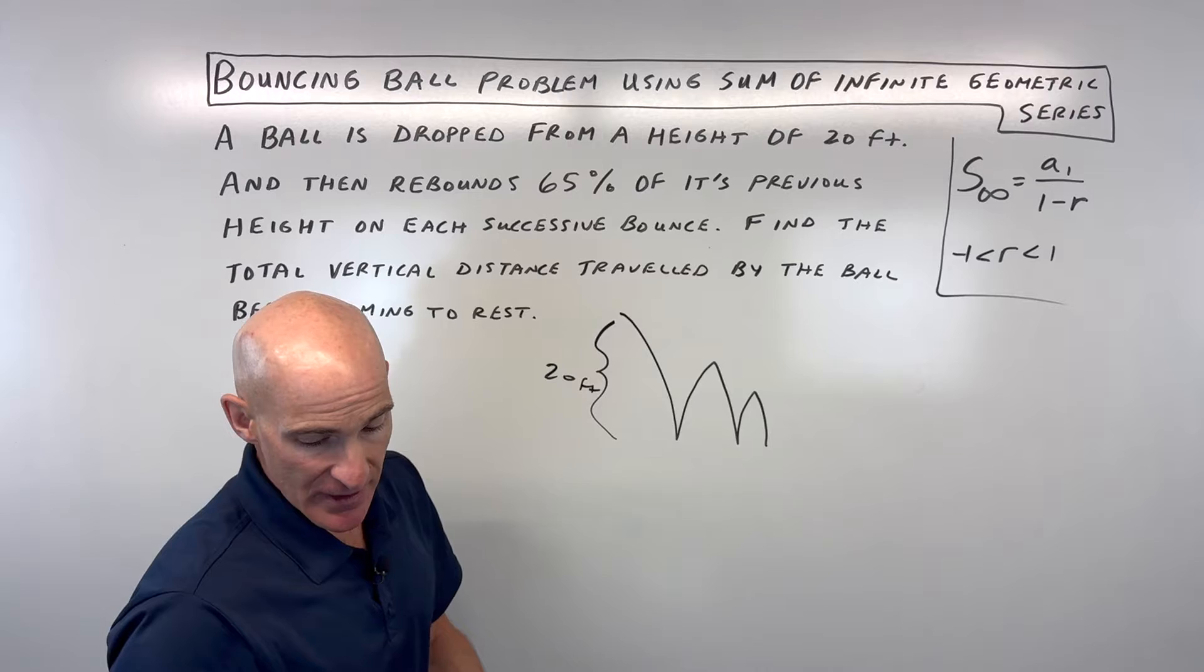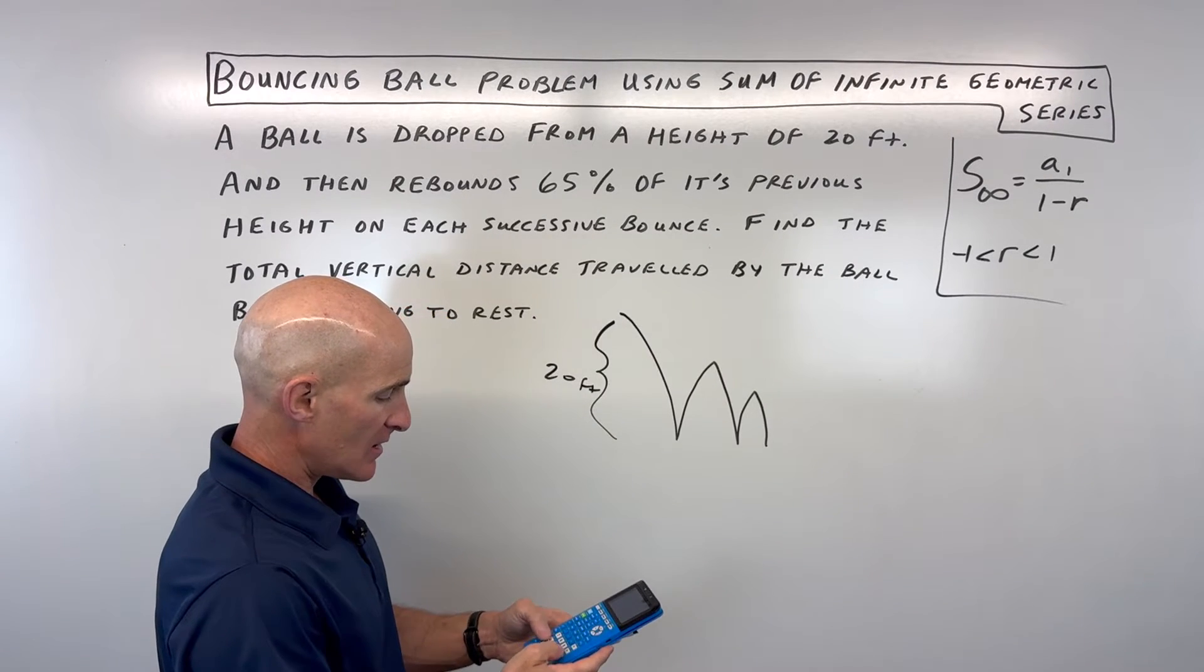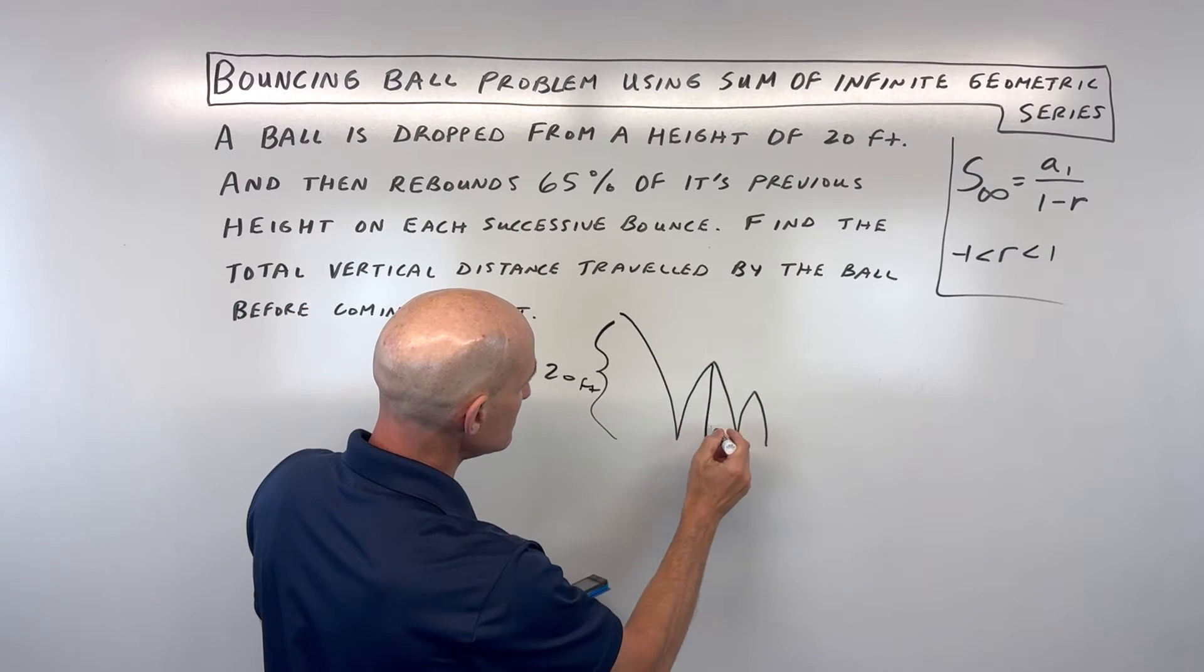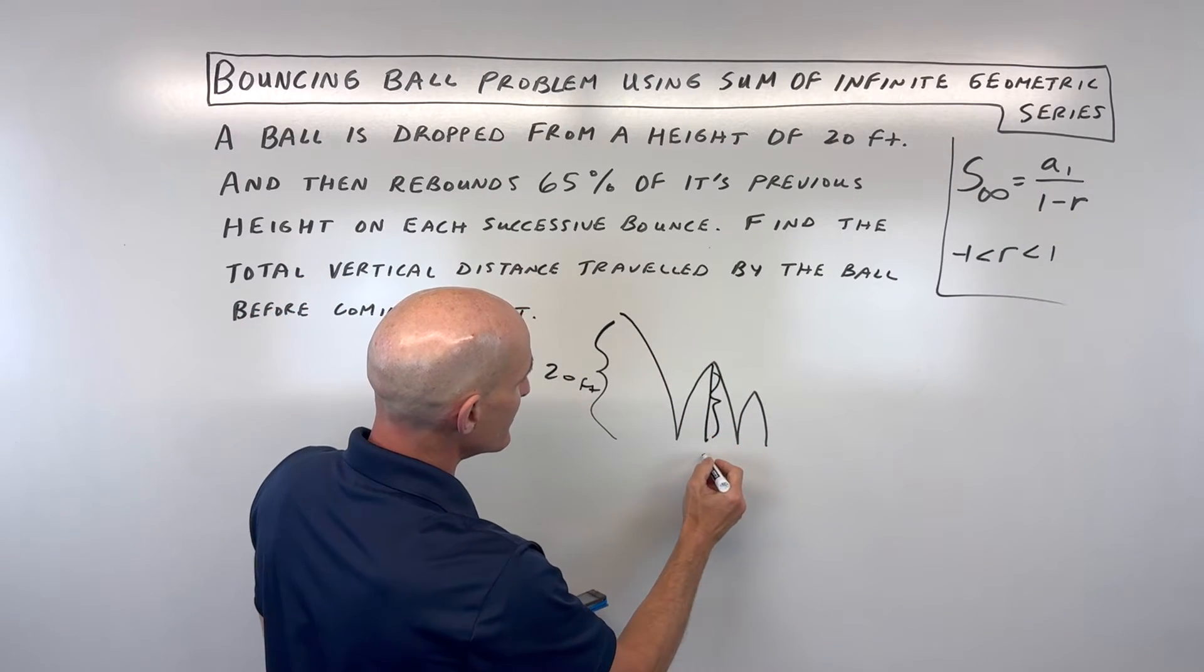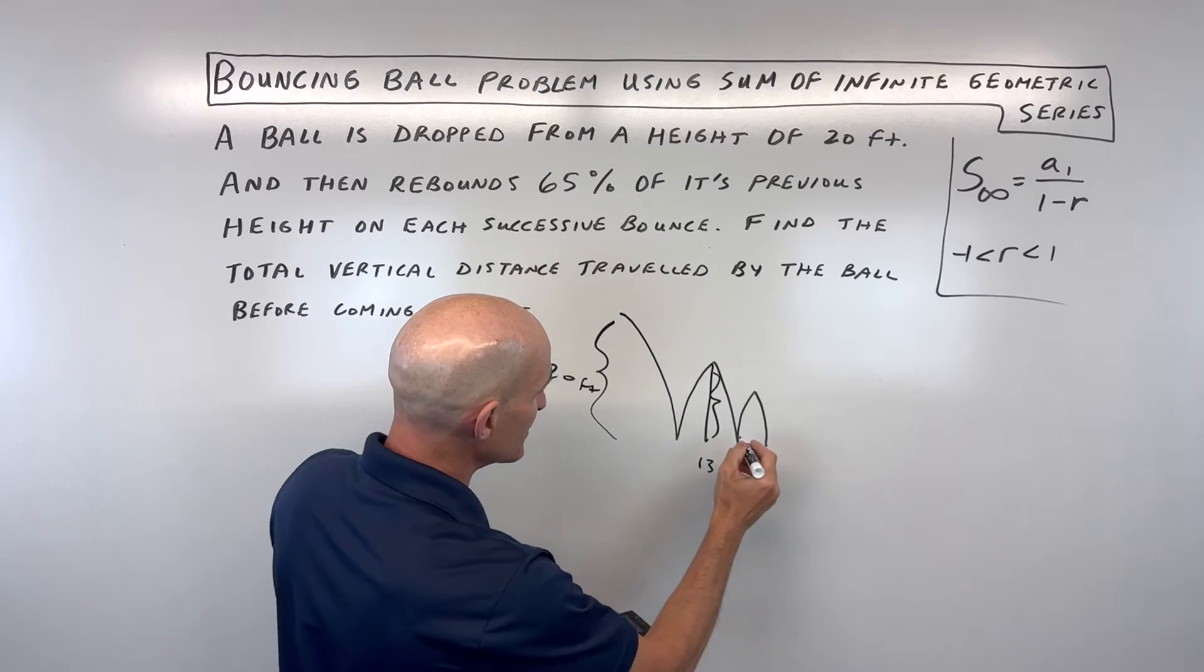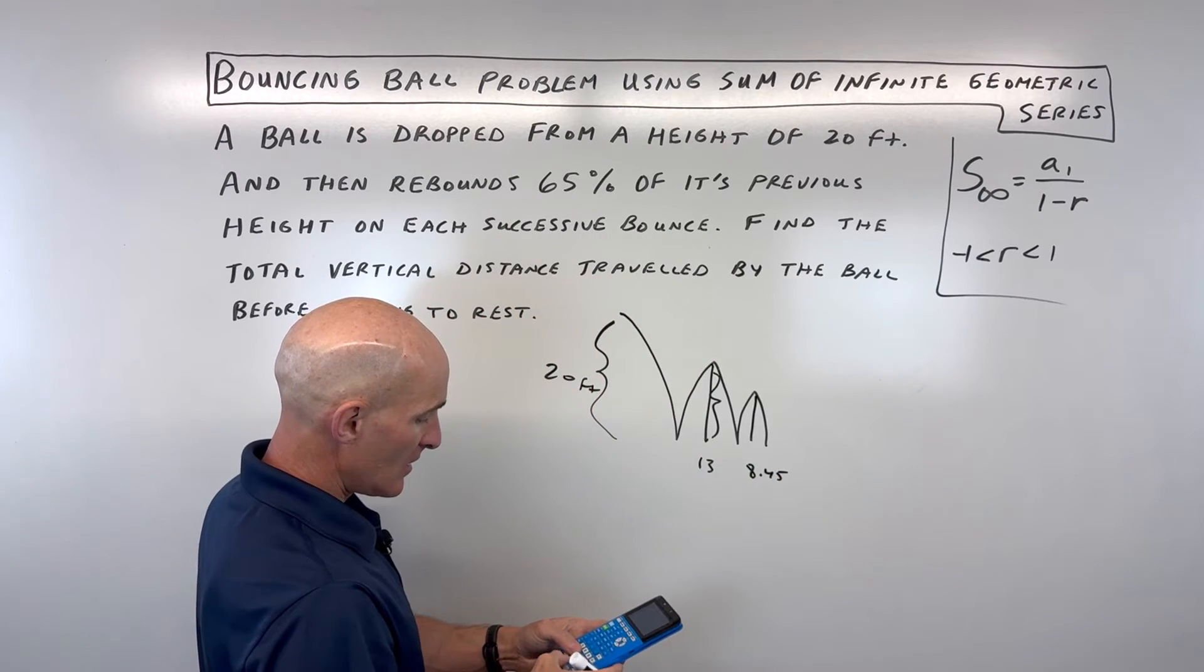So what we're going to do is think about this. Let me show you on the calculator. So 20, then times 0.65. This height right here, that distance is 13 feet. If we multiply by 65% again, this one has a height of 8.45.